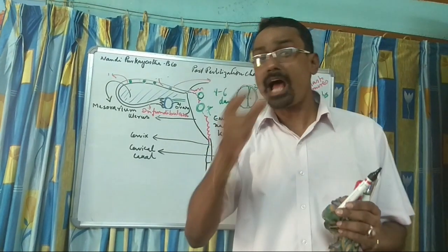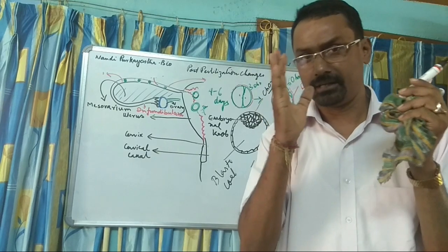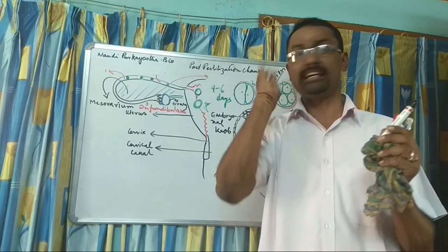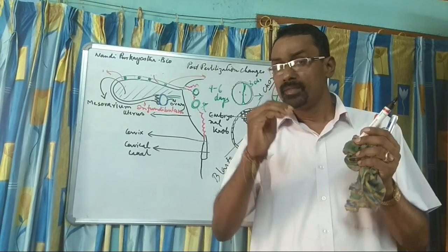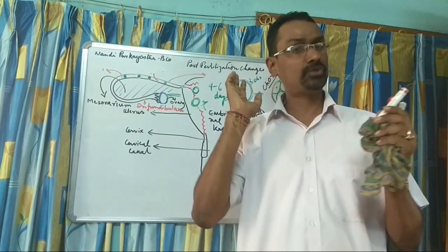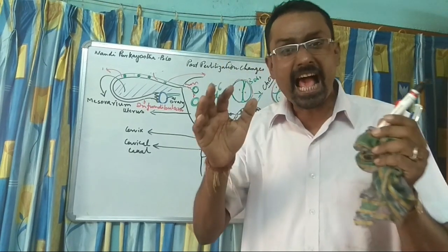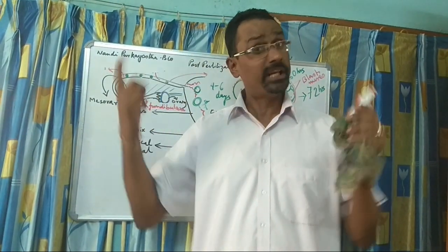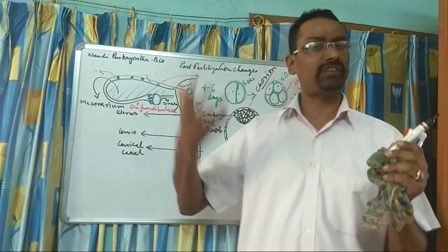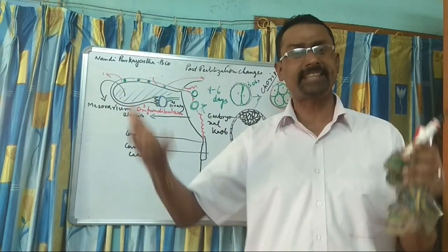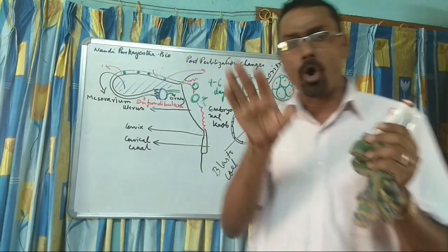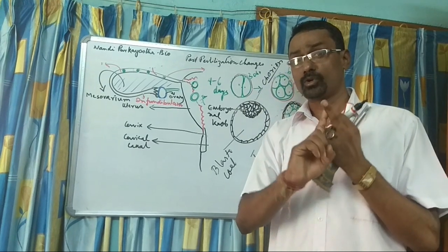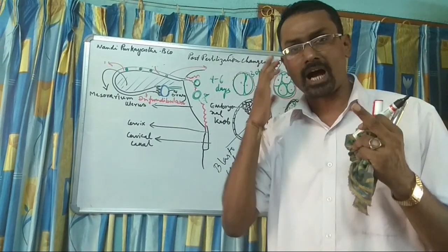After that comes gastrulation. In gastrulation, you find the occurrence of three germ layers: Ectoderm, Endoderm, and Mesoderm. These three layers help in the formation of defined organs like kidney, heart, lungs, hands, nose, and tongue. All these organs are formed by the three germinal layers.